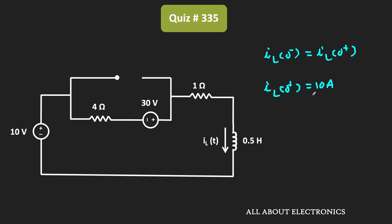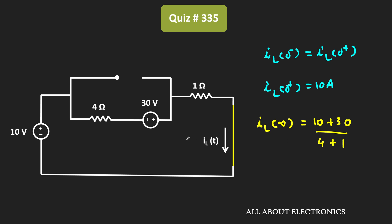Once the circuit remains in this condition for a long time, once again this inductor will act as a short circuit. In this condition, the current through the inductor is equal to the steady state current, or theoretically we can say it is equal to IL(∞). This IL(∞) is equal to (10V + 30V) divided by (4 Ohm + 1 Ohm). So this current IL(∞) is equal to 40V divided by 5 Ohm, that is equal to 8A. In this way, for the given circuit, we got IL(0+) as well as IL(∞).